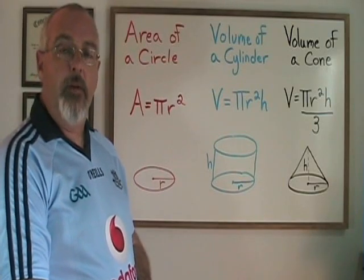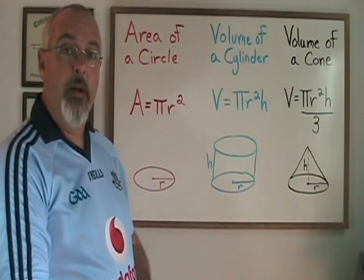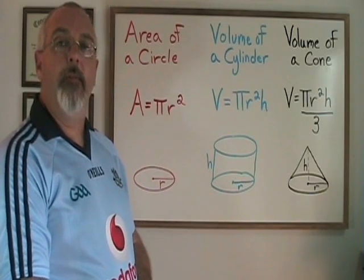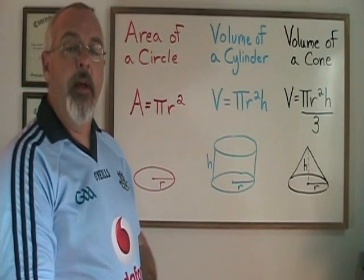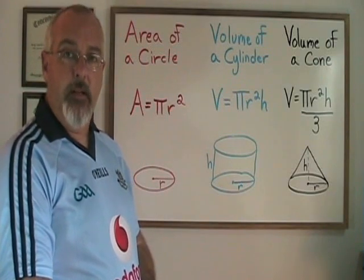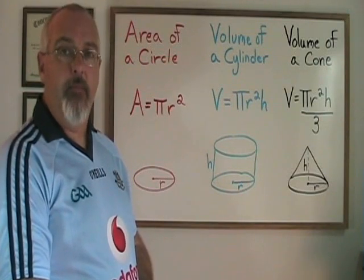It was Archimedes who first showed that the volume of a cone is exactly one-third the volume of a cylinder with the same radius and height. Let's do a little demonstration so that we can feel some confidence that Archimedes was right about the relationship between the volumes of a cone and a cylinder.